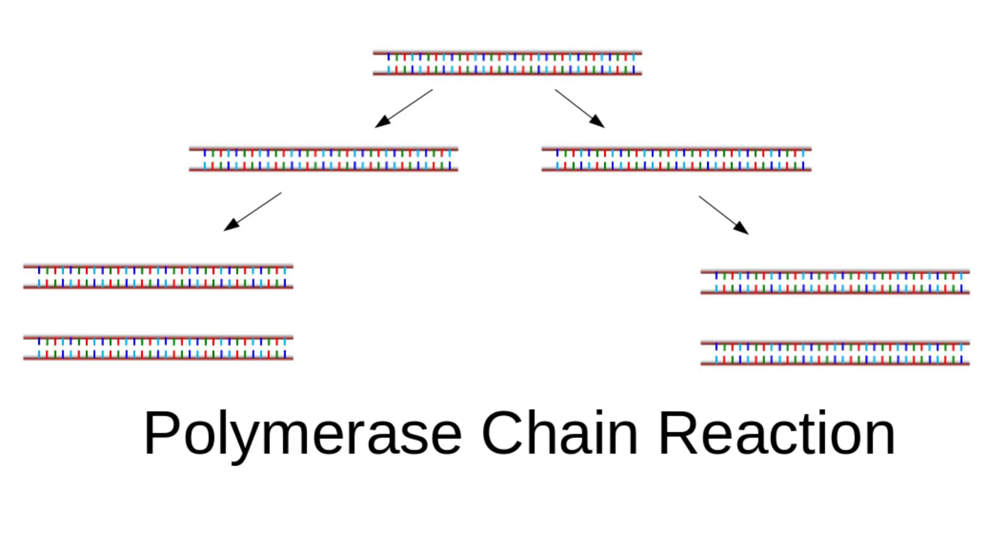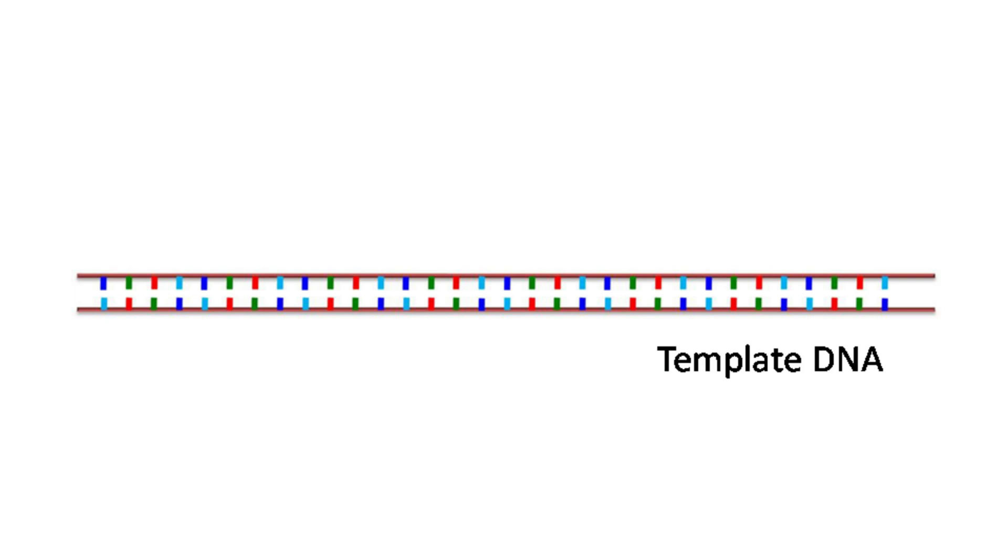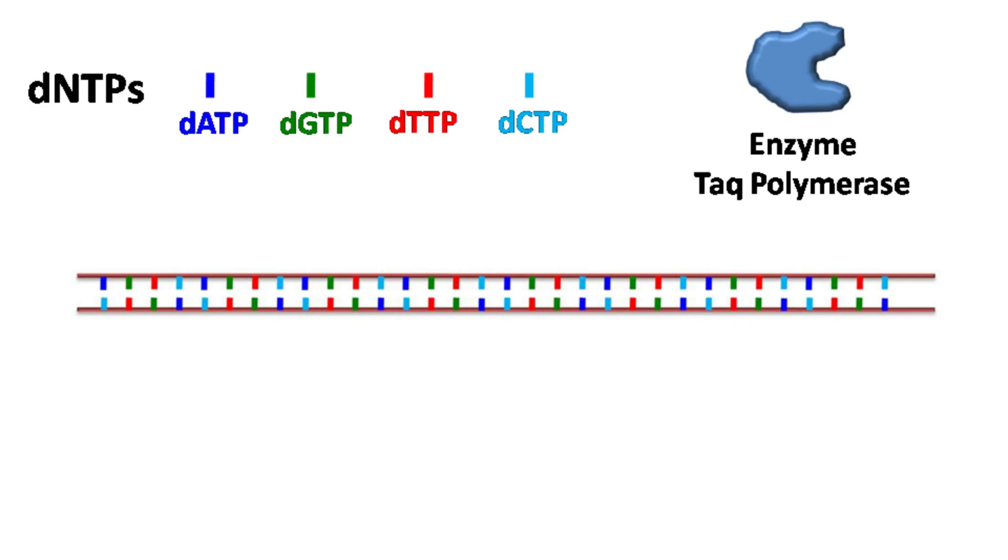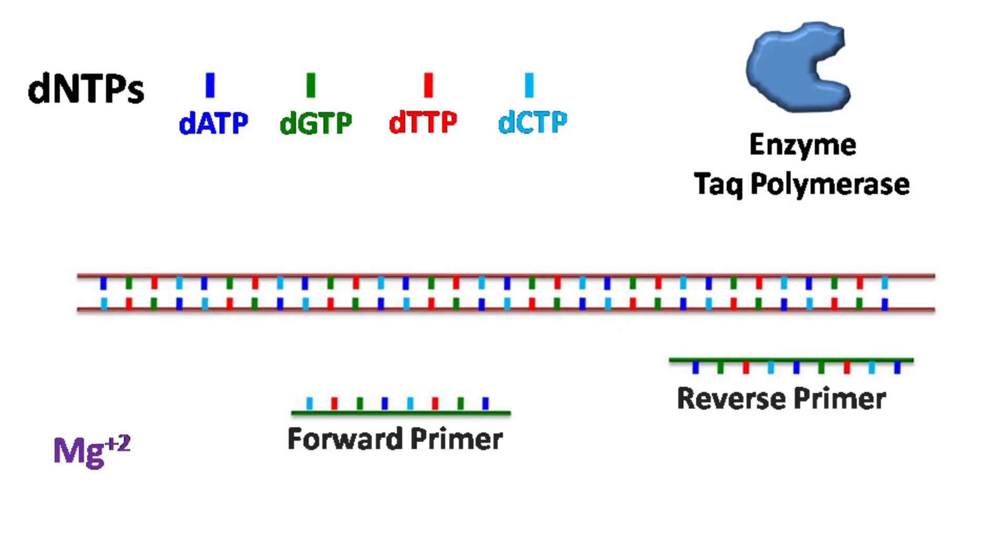A typical PCR reaction requires a template DNA, dNTPs, which includes the dATP, the dGTP, the dTTP, and the dCTP, Taq Polymerase Enzyme, which is a thermostable DNA polymerase enzyme, magnesium ions, and finally forward and reverse primers.